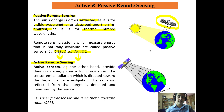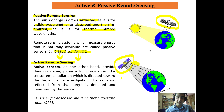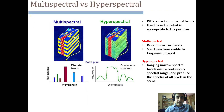In active remote sensing, the satellite throws its own source of energy onto the earth, which is then reflected as a backscatter coefficient back to the satellite. The sensor placed on the satellite records that backscatter coefficient and forms an image. Examples of active remote sensing sensors include laser fluorosensors and Synthetic Aperture Radar (SAR).